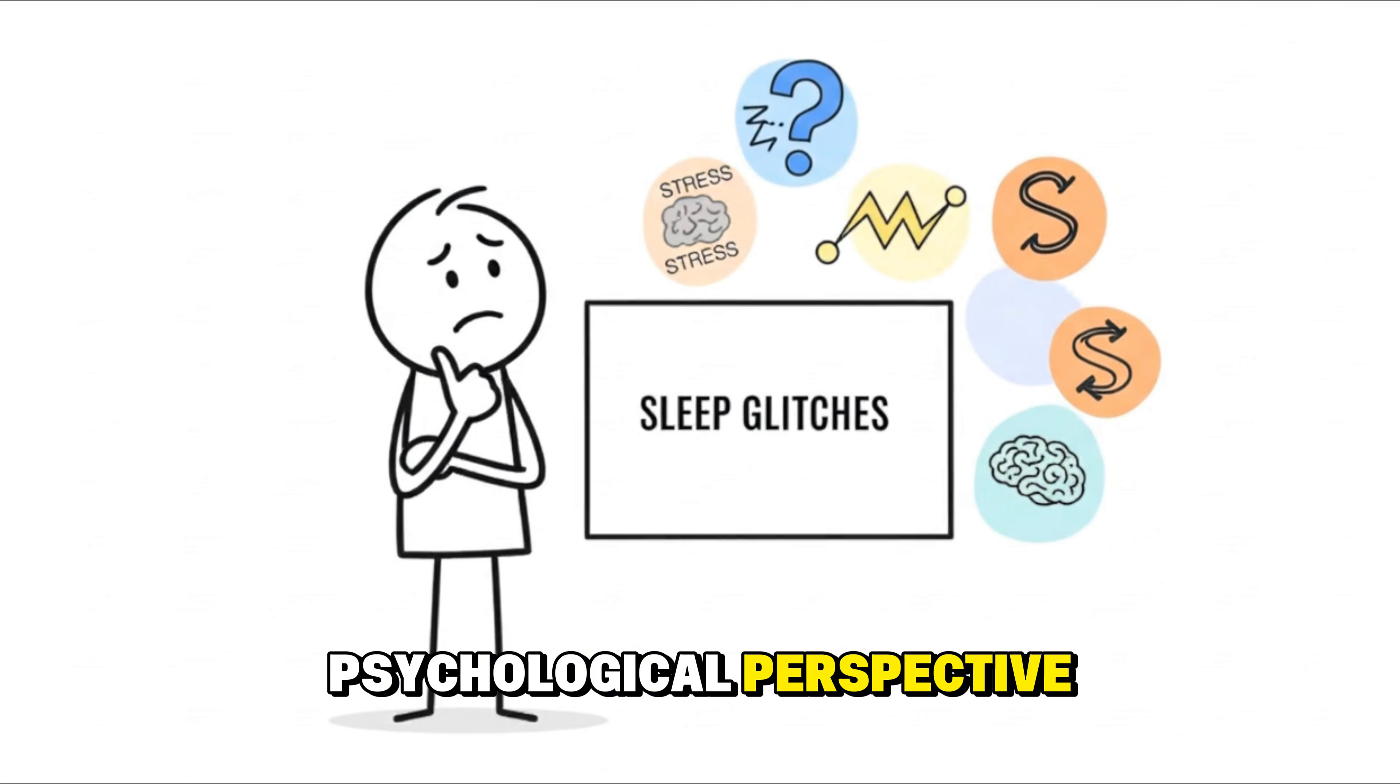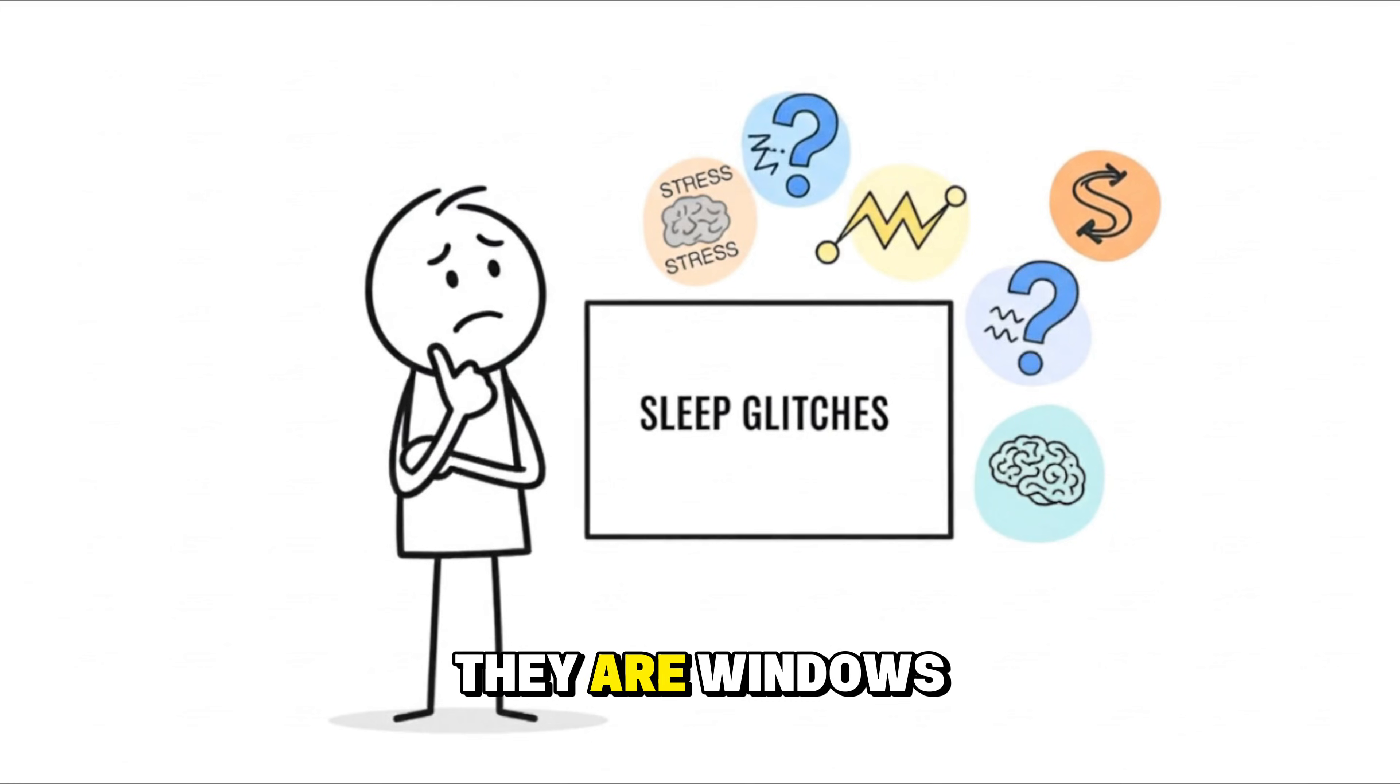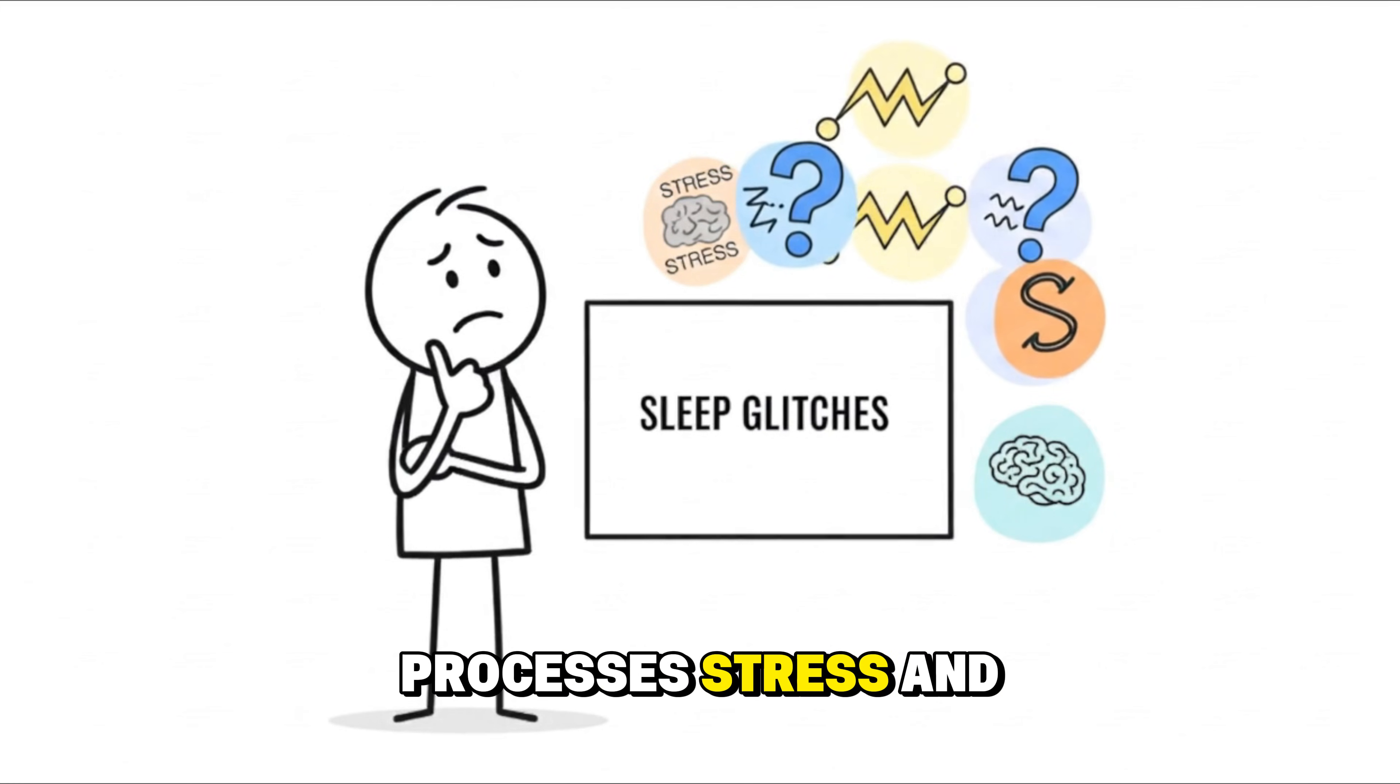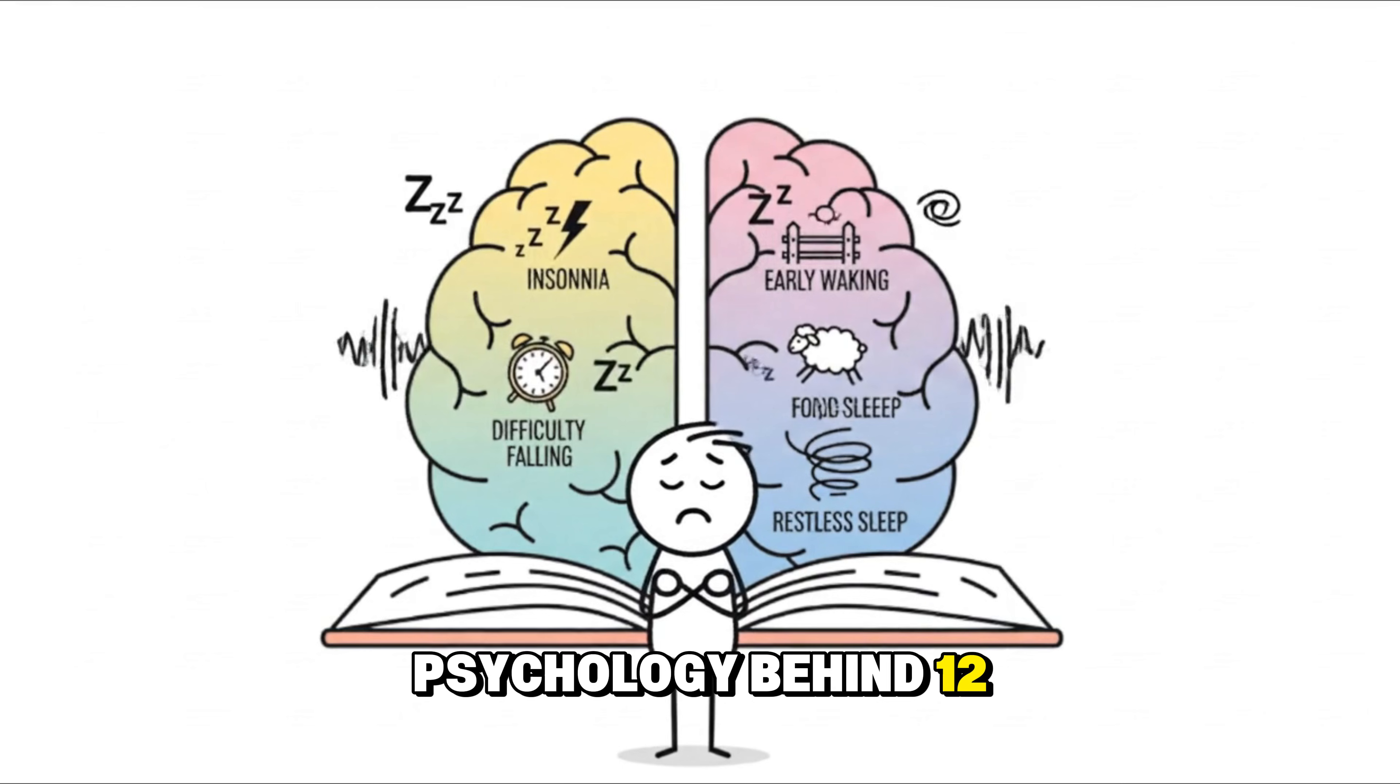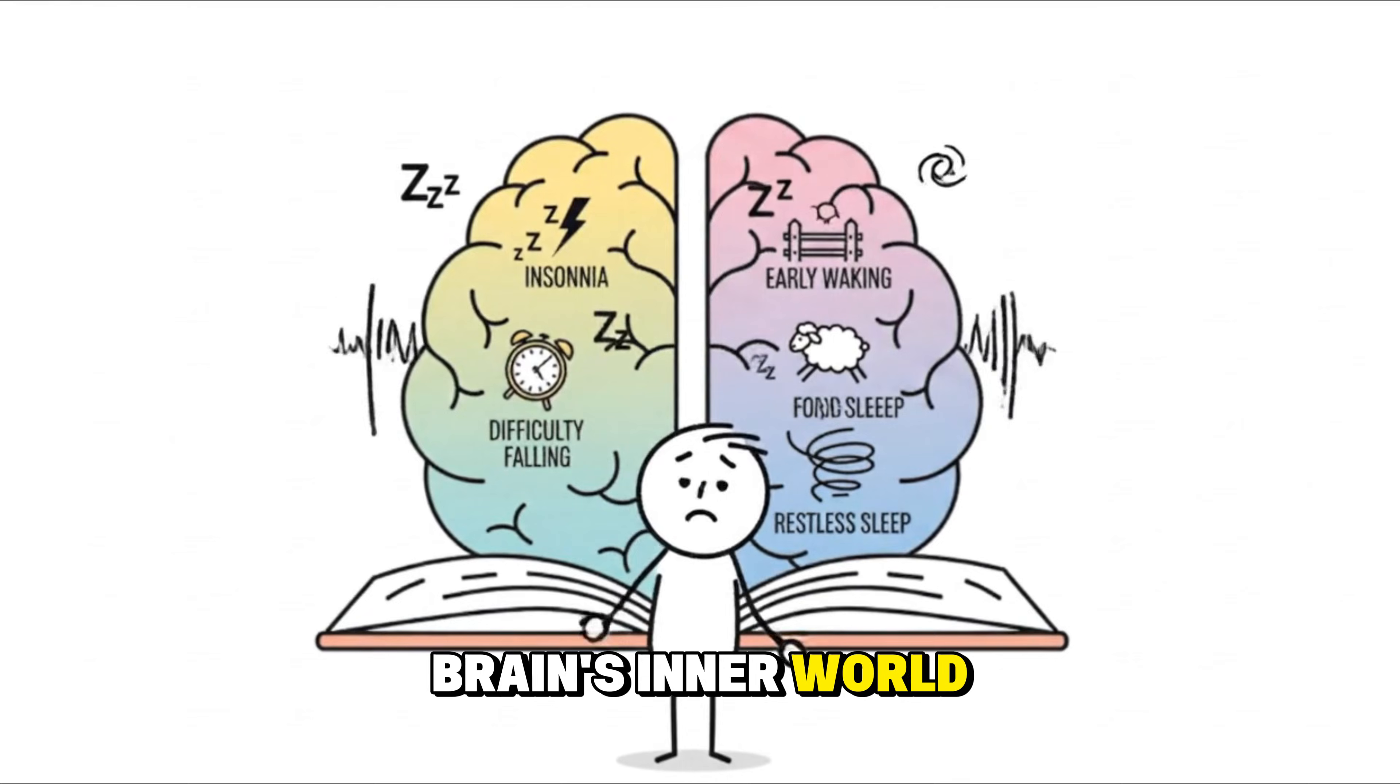But from a psychological perspective, they are much more than accidental malfunctions. They are windows into how your nervous system protects you, processes stress, and responds to uncertainty. Tonight, you'll discover the hidden psychology behind 12 of the most common sleep glitches, and what they reveal about your brain's inner world.